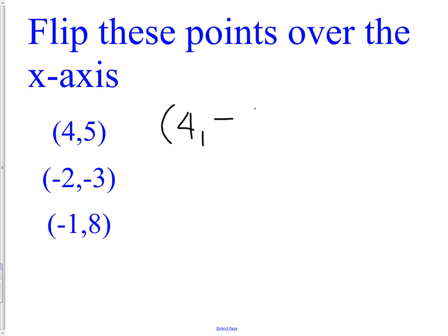4, but the y changes to the opposite. So I was at positive 5 in the y, I'm now at -5. I was at -3, I'm now at positive 3. I was at positive 8, I'm now at -8. And that's how simple it is. Flipping over the x and y-axis is fairly straightforward.